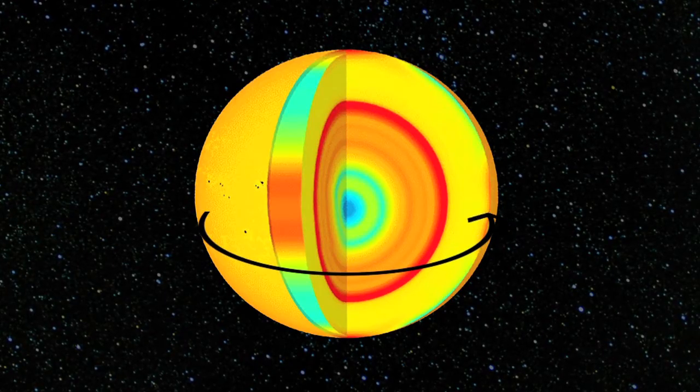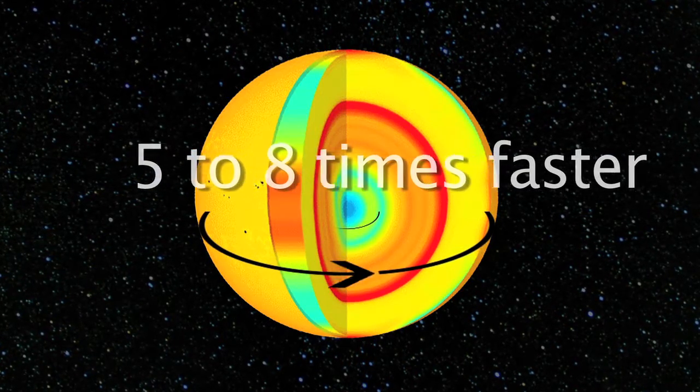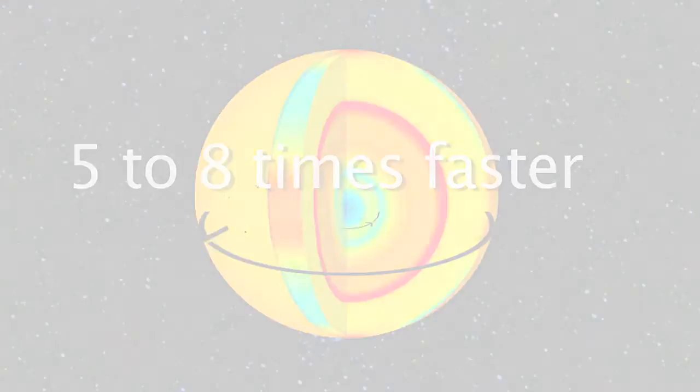So studying solar seismology has shown that the Sun does not rotate in a rigid way. Its core turns 5 to 8 times faster than the external layers.